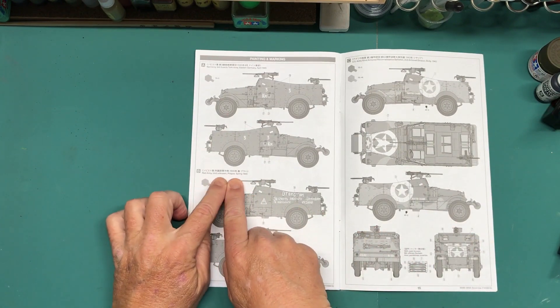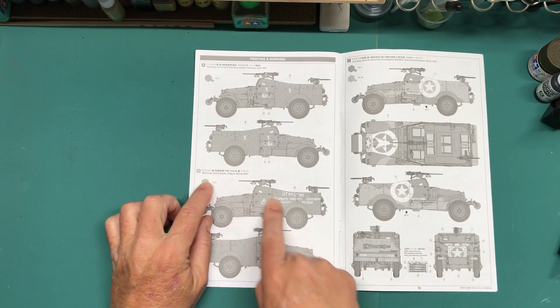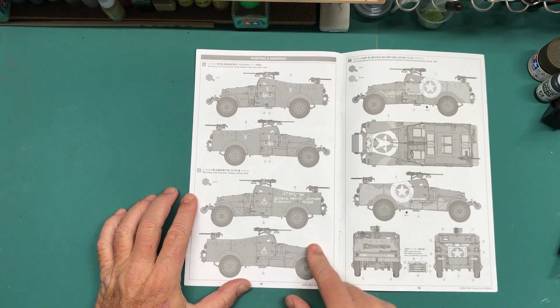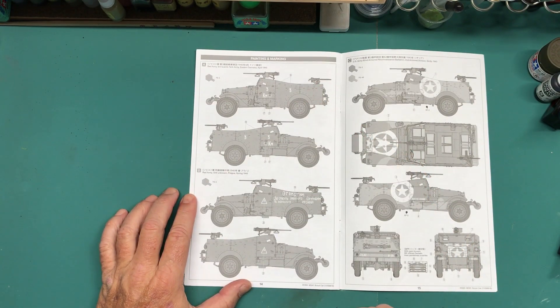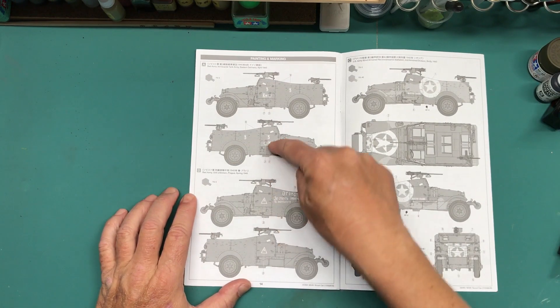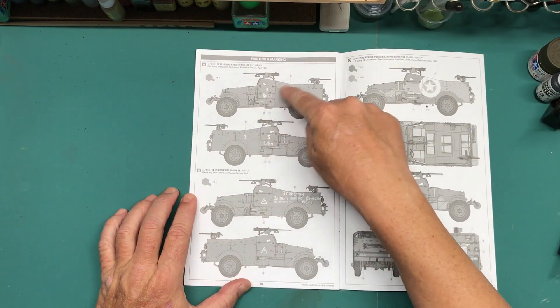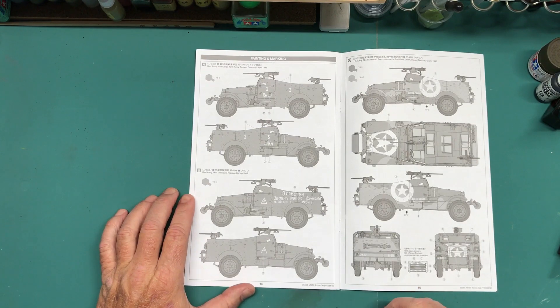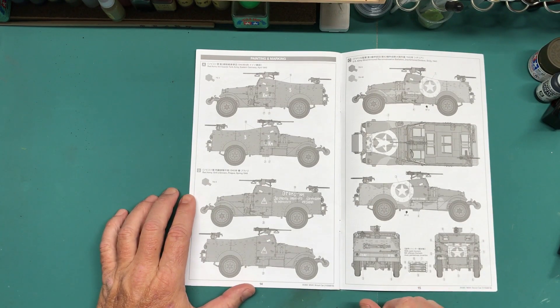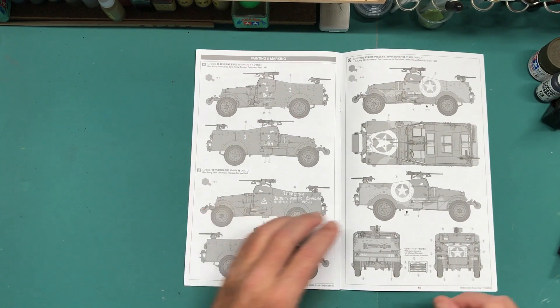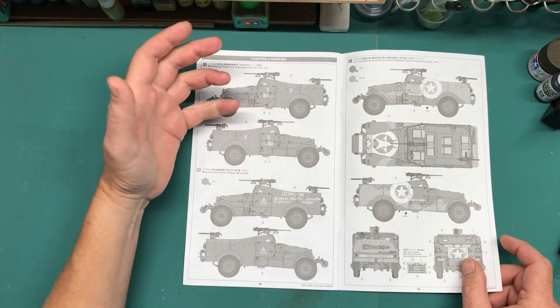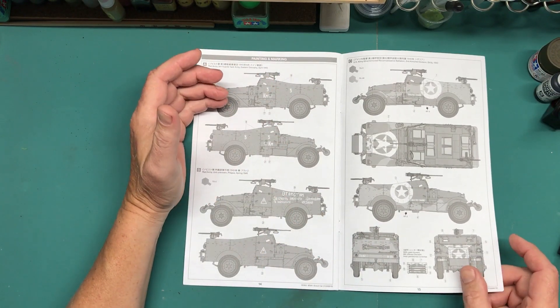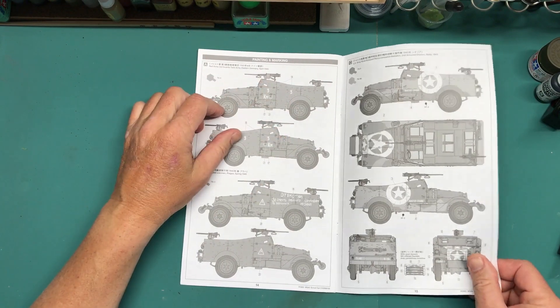There's Unit Unknown, Prague, Spring 45. So I need to figure out which one of those two I'm going to do. I'm probably thinking about this one since it's a little simpler as far as the markings go, less decals that have to apply, which means less carrier film and everything else. But as I said, this will probably be the one, and because it does come with Soviet figures, I want to be able to use them all. So this would be the way to go.